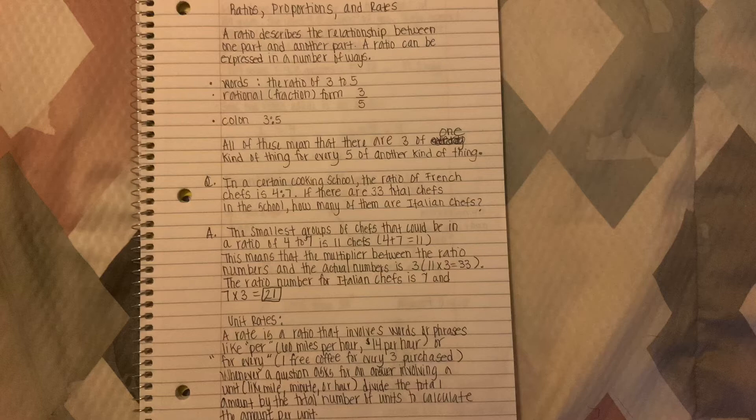I gave you a problem. Let's read it and solve it. In a certain cooking school, the ratio of French chefs is 4 to 7. If there are 33 total chefs in the school, how many of them are Italian chefs? The smallest group of chefs that could be in a ratio of 4 to 7 is 11 chefs because you're going to add 4 + 7 and get 11. This means that the multiplier between the ratio numbers and the actual numbers is 3.